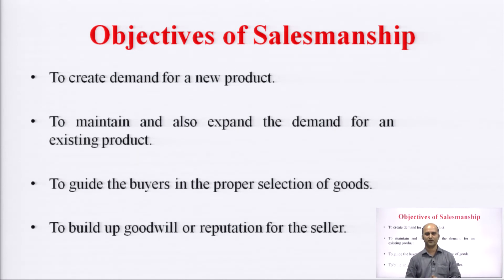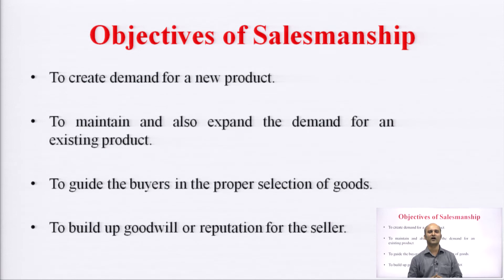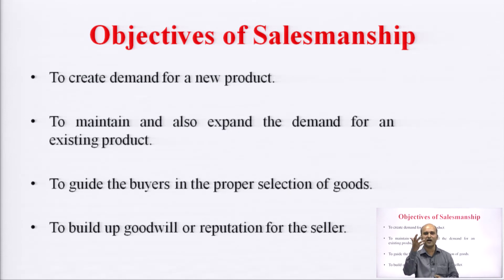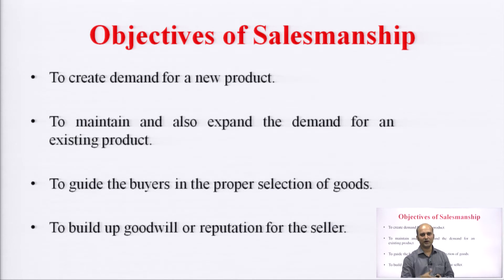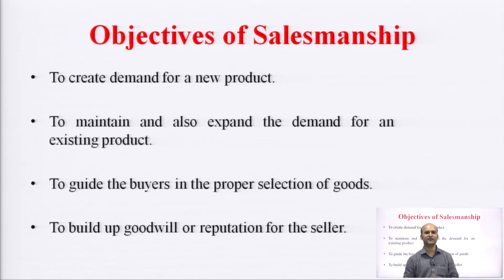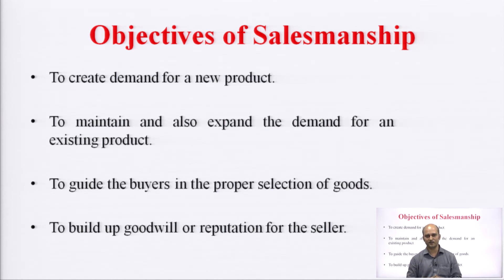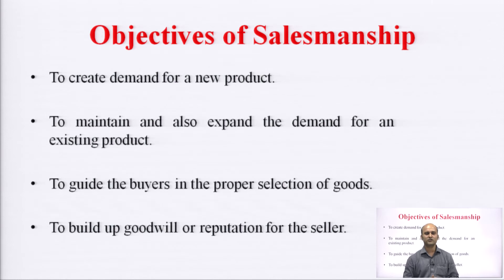The objective of salesmanship is to create demand for a new product. The basic objective is to create demand in the mind of the customer — once the demand is there, the customer will buy. For example, with a product like Niacin powder which works well for itching in rainy or summer season, you motivate the customer to use it. You can also take the example of a juicer, mixer, and grinder — you motivate the customer so that they buy your product.